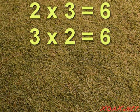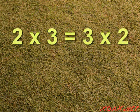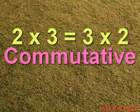So it does not matter which order we multiply the numbers in. 2 times 3 equals 3 times 2. This demonstrates the commutative property of multiplication.